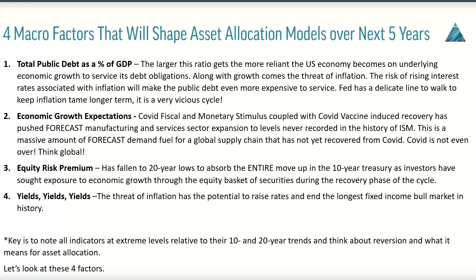Equity risk premium is one of my favorite topics. I've been warning investors about this for probably the past year. We now have equity risk premium sitting at 20-year lows, and equity risk premium continues to literally absorb the entire move up in the 10-year treasury, sustaining the elevated levels of forward PE on the S&P 500 and elsewhere. Point number four is yield. These four points are very, very much interwoven and related.